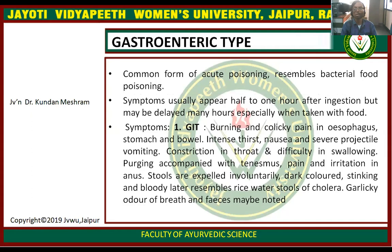Gastroenteric type: this is the most common form of acute poisoning, resembling bacterial food poisoning. Symptoms usually appear half to one hour after ingestion but may be delayed many hours, especially when taken with food. Gastrointestinal symptoms include burning and colicky pain in the esophagus, stomach, and bowel; intense thirst; nausea and severe projectile vomiting; constriction in throat and difficulty in swallowing; purging accompanied with tenesmus, pain, and irritation in the anus. Stools are excessive in volume, dark colored, stinking, and bloody — later resembling rice water stools of cholera. A garlic odor of breath and tissues may be noted.